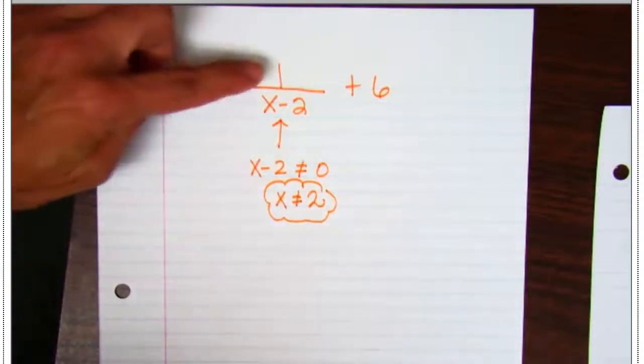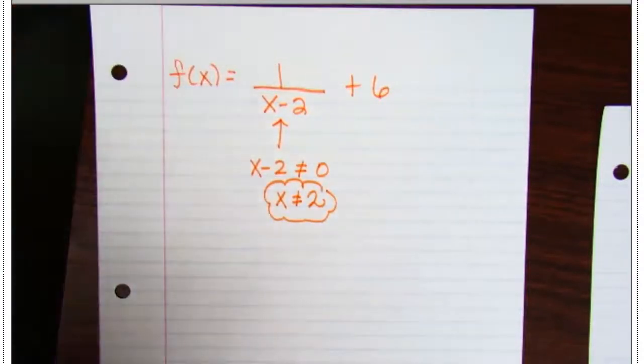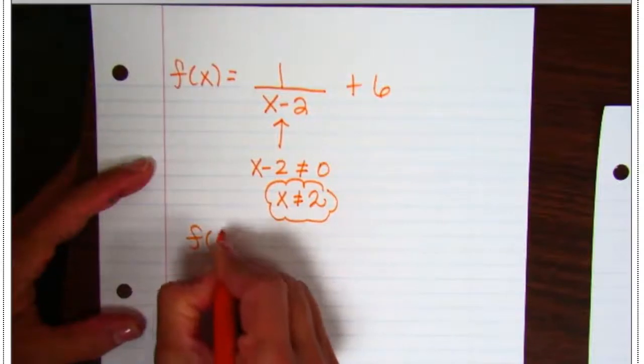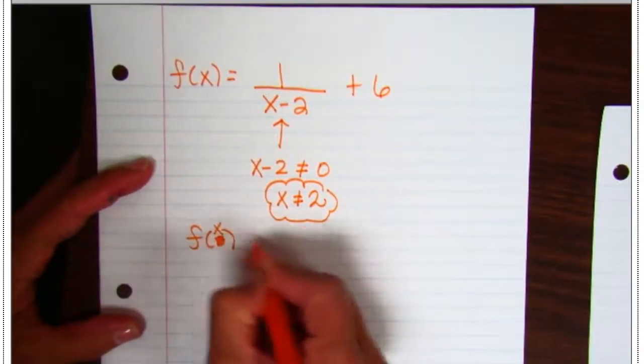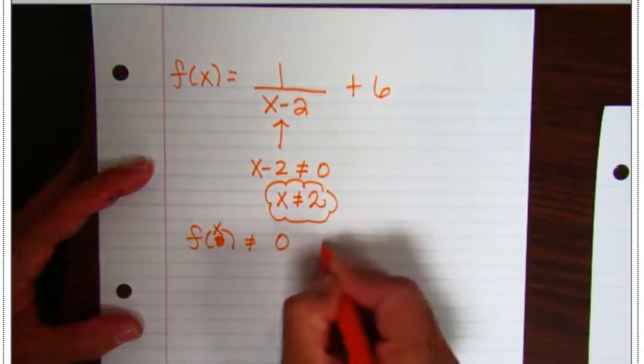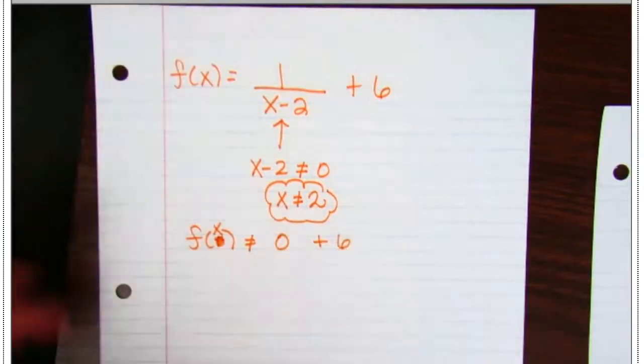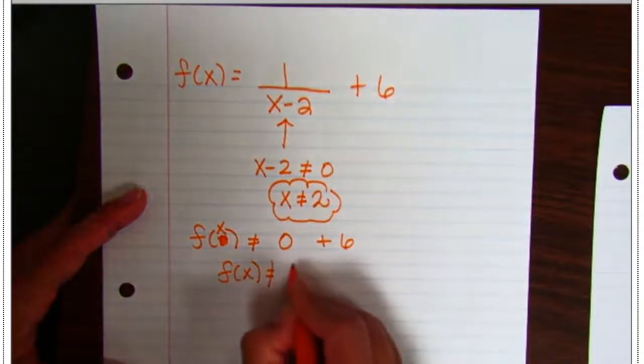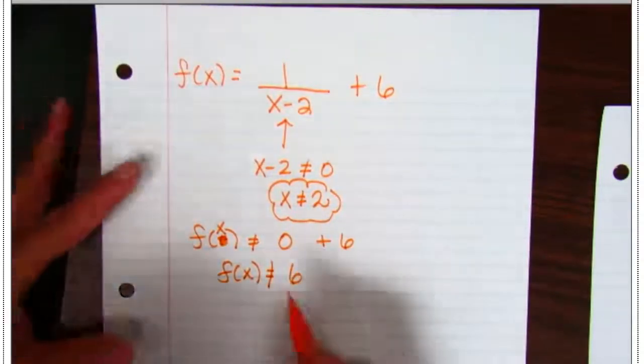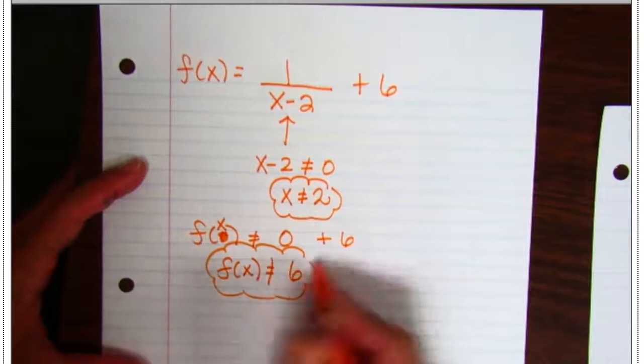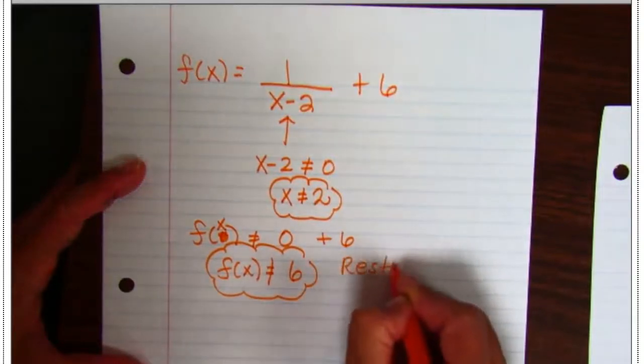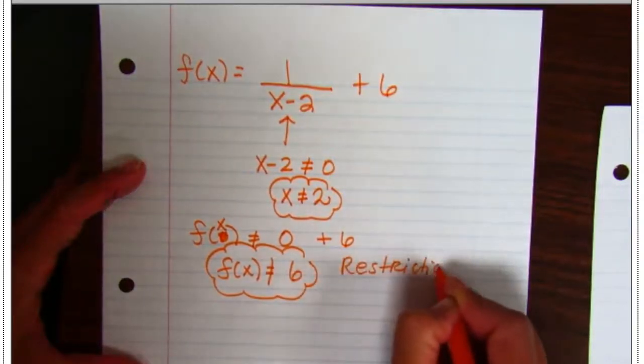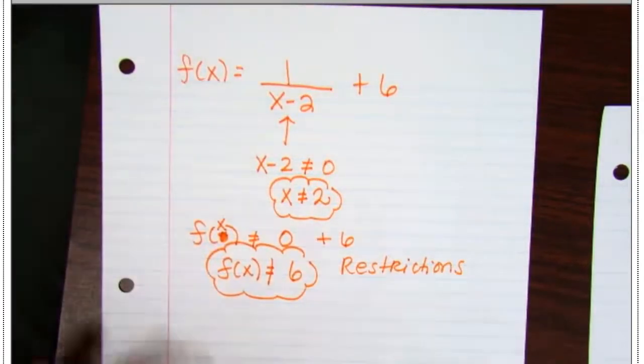I know that x cannot equal a positive 2. I also know, since there is just no possible way that that fraction can equal 0, then there is no possible way f of x or your y is ever going to equal a 6. These are restrictions. These are restrictions algebraically.